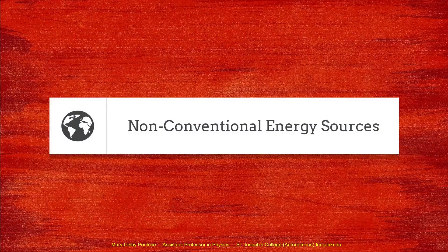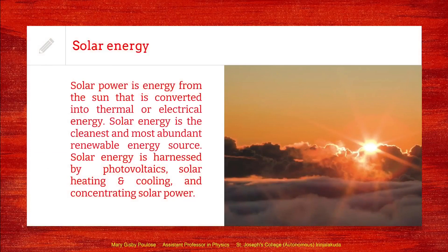Now let us look briefly at the different non-conventional energy sources. Solar energy is obtained directly from the sun and the sun's heat is converted into heat energy or electrical energy. This is the most cleanest and most abundant type of renewable energy source — no burning takes place and there is no harm to the nature. Solar energy is usually obtained by different methods like the photovoltaic mechanism, solar heating and cooling, or by concentrating solar power. These three techniques are used to tap the solar energy.